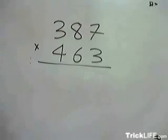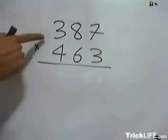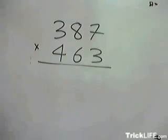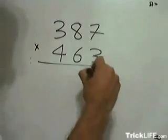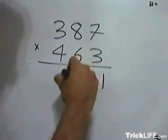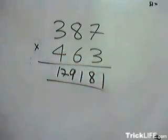In this video we'll see how to multiply two three-digit numbers in one step, so you can multiply three hundred and eighty-seven by four sixty-three as fast as that.